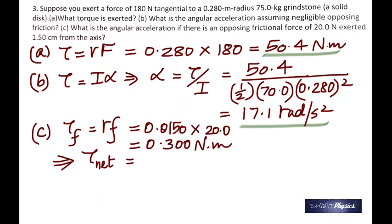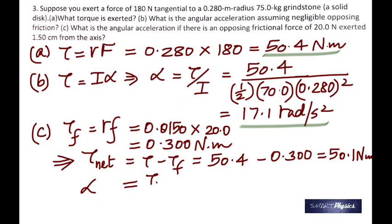Therefore, the net torque is... see, friction is always opposing, so you take away that from what you got before. So before you had 50.4, now friction opposes it by that much. So the net is 50.1. Now once again, calculate alpha with the new torque.